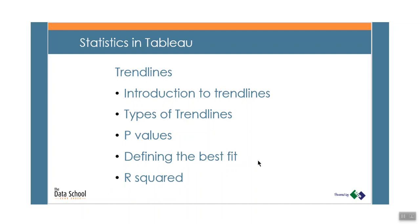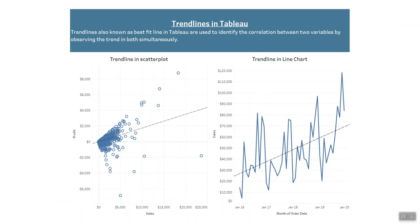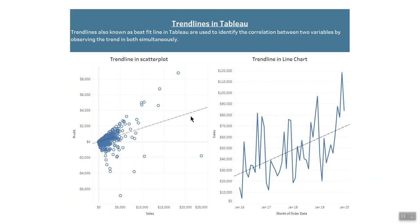Let's start by introducing Trendlines. Trendlines, also known as best fit lines in Tableau, are used to identify the correlation between two predicted values by observing the trend in both of them simultaneously. They are also used to predict the continuation of a certain trend of a variable. With just a couple of clicks, Tableau allows you to easily add a Trendline to a visualization to highlight any correlation in scatterplots or line charts.